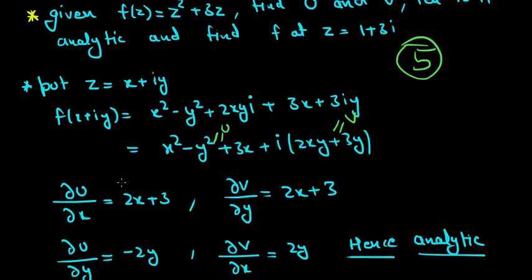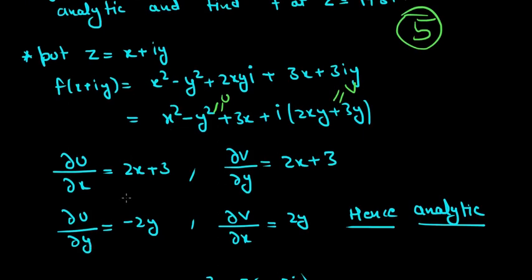∂u/∂y is equal to minus 2y, and ∂v/∂x is equal to 2y. So ∂u/∂y equals minus ∂v/∂x. Hence the Cauchy-Riemann equations hold, hence this function is analytic.